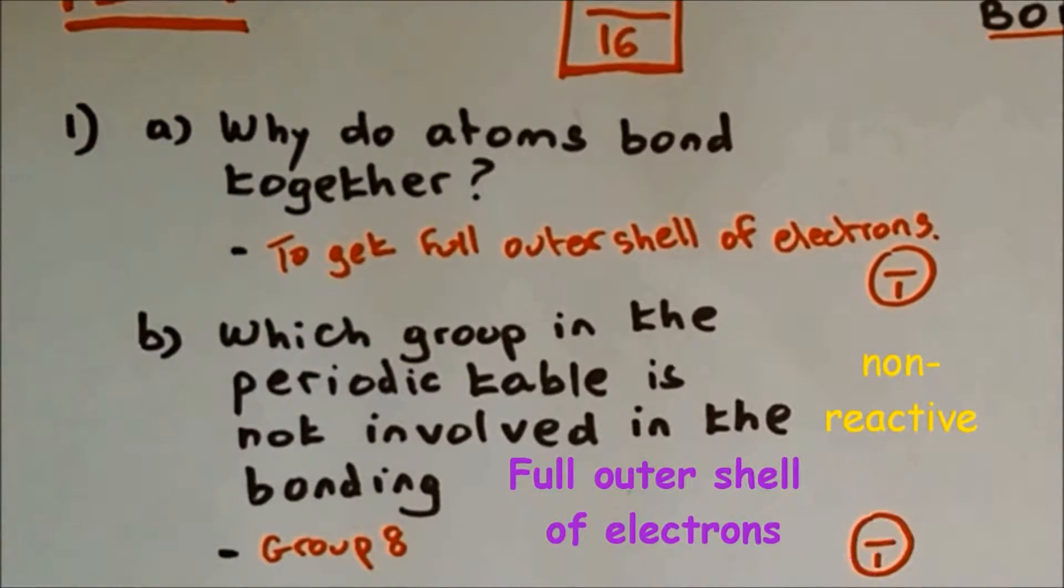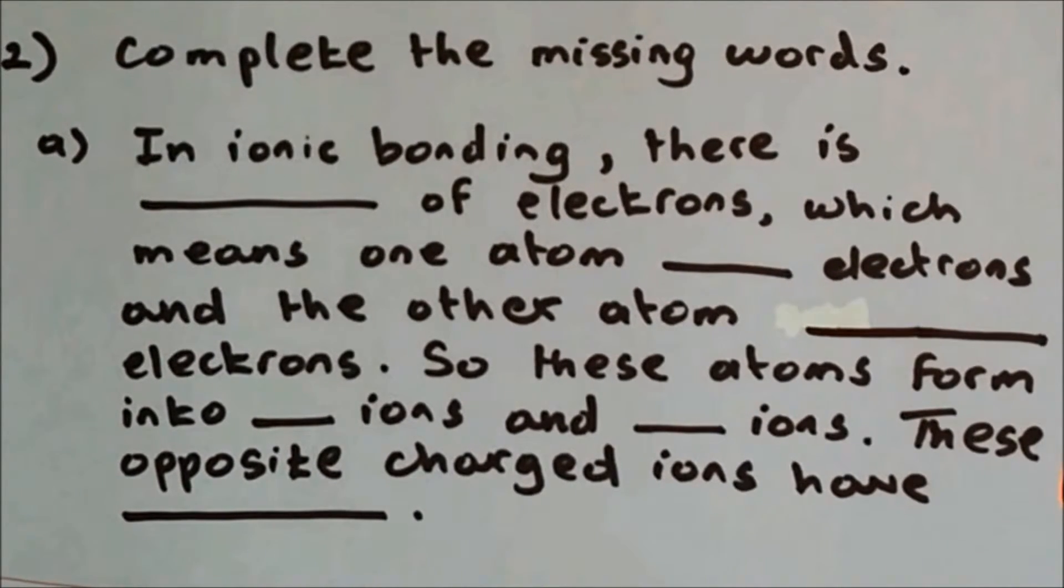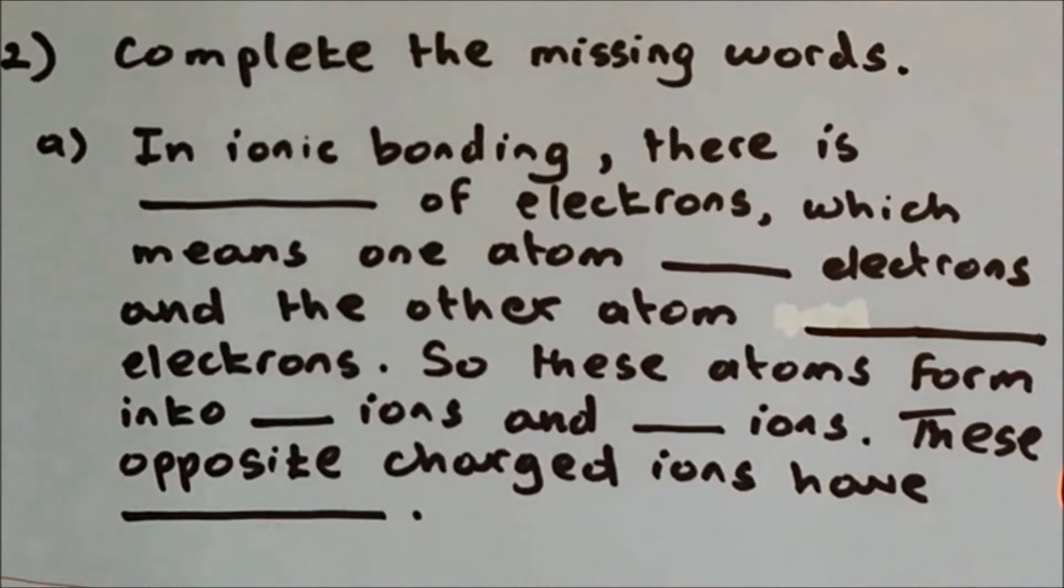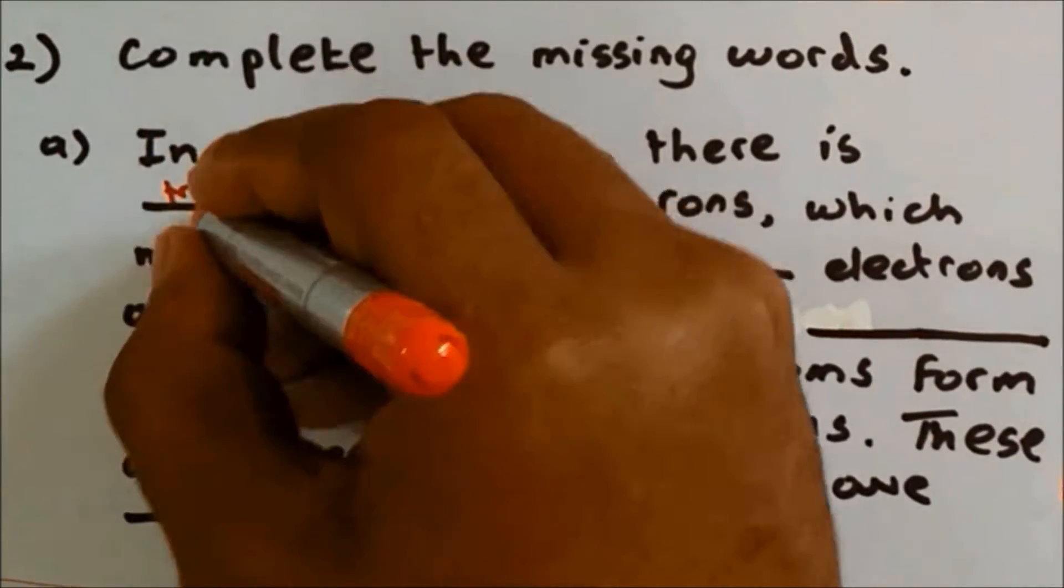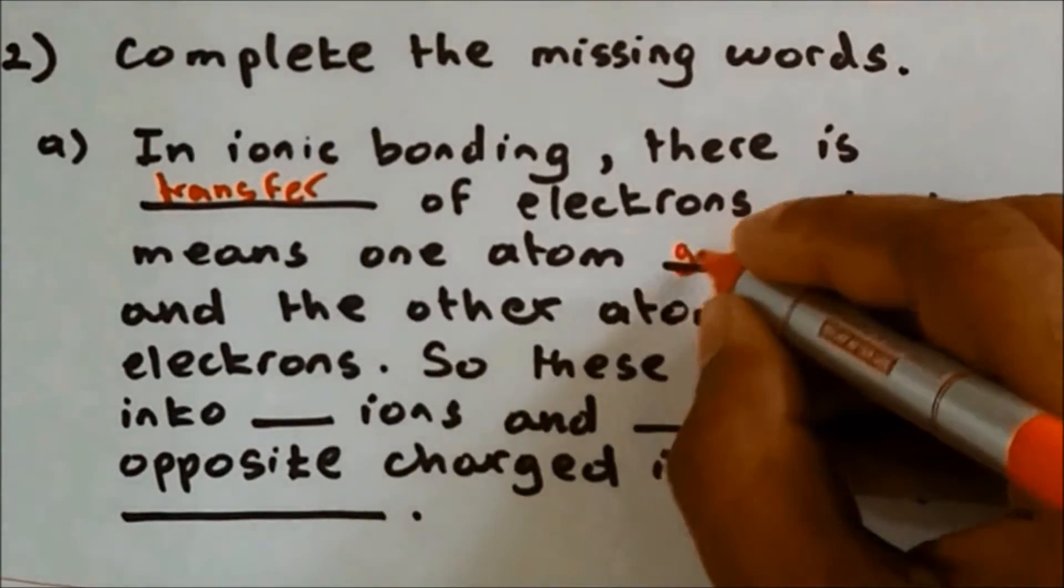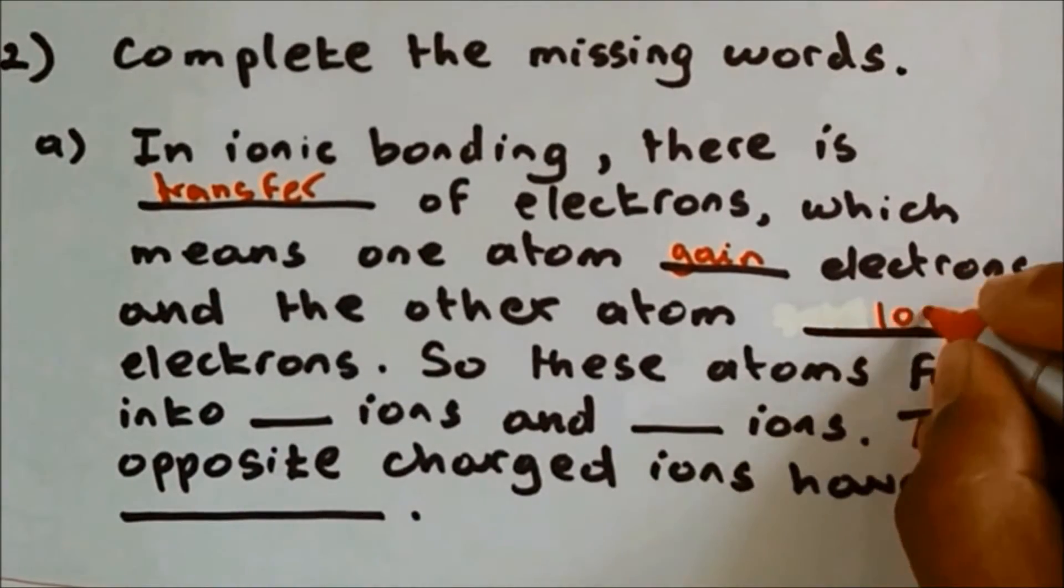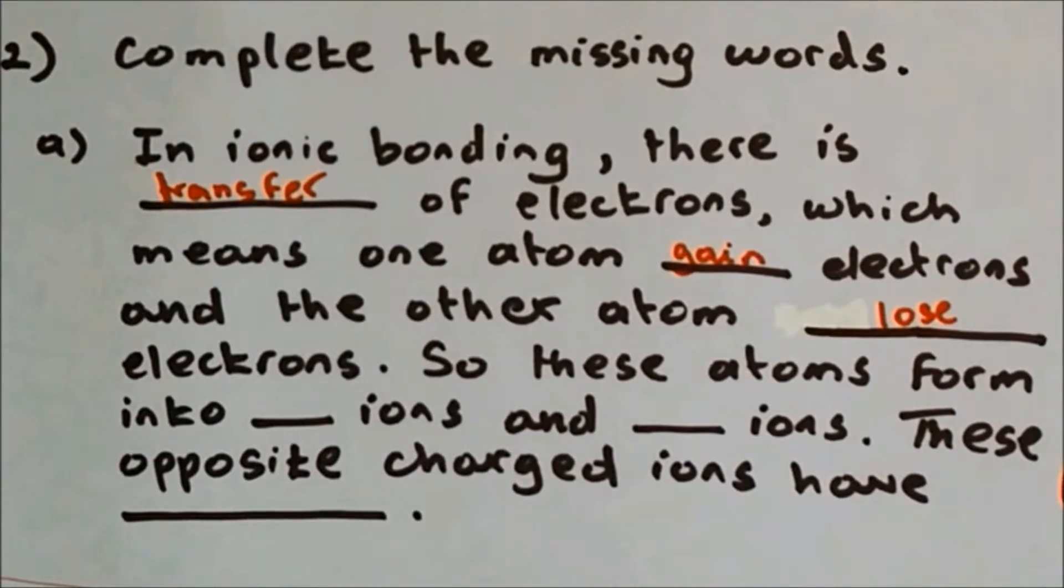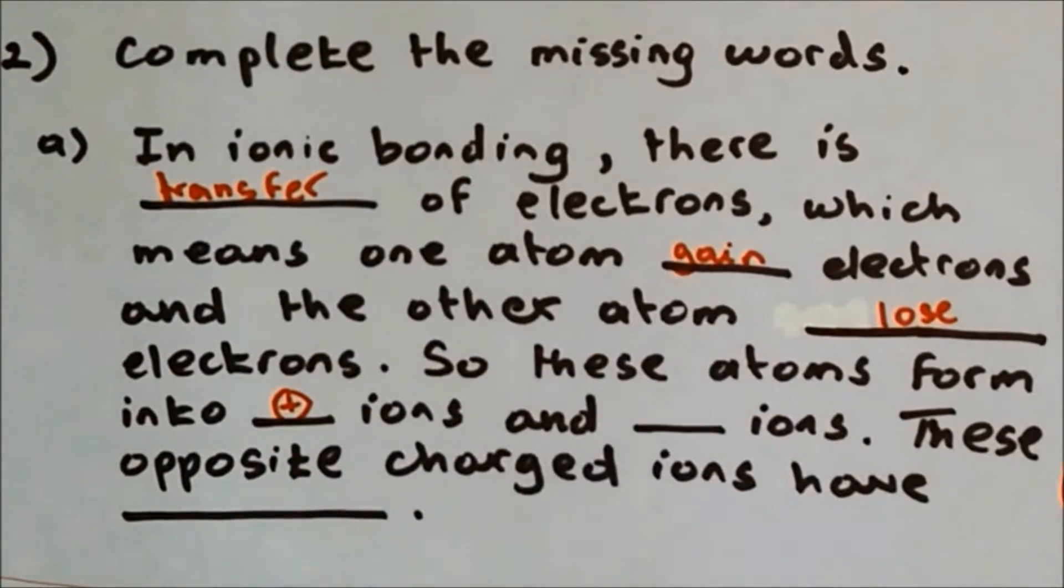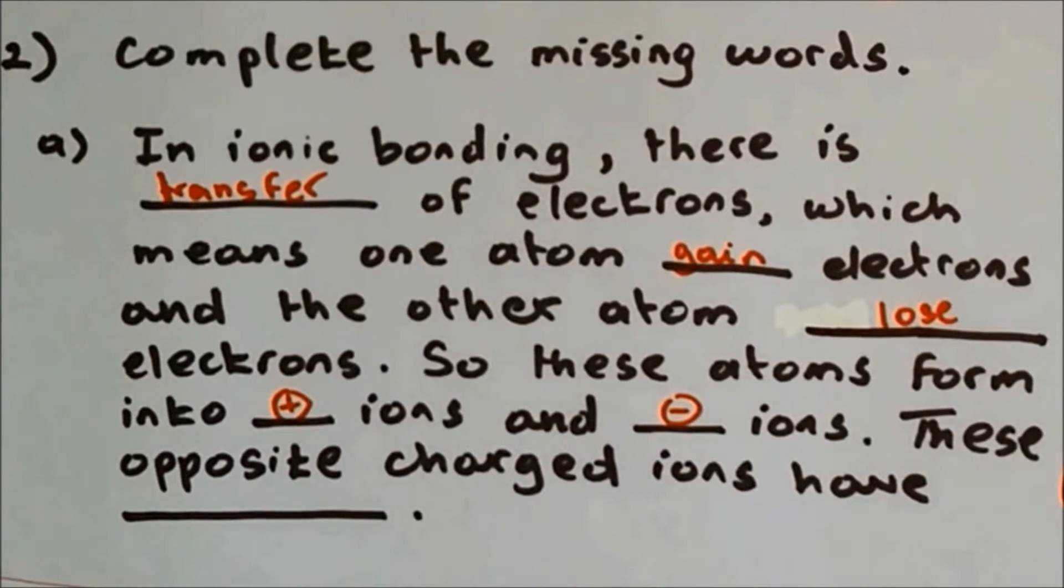Question 2: Complete the missing words. In ionic bonding, there is transfer of electrons, which means one atom gains electrons and the other atom loses electrons. So these atoms form into positive ions and negative ions. These opposite charged ions have attraction.